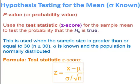The formula for the test statistic, or z-score, used to find the probability or area under the curve is: z equals the sample mean minus the population mean, divided by the population standard deviation divided by the square root of the sample size.